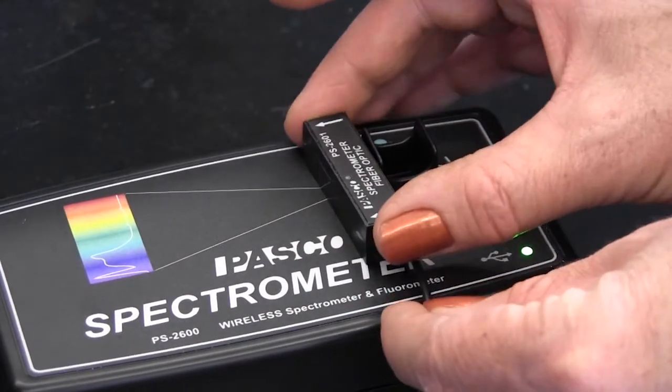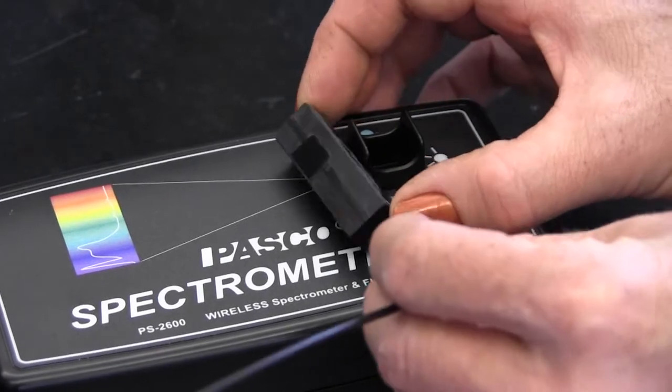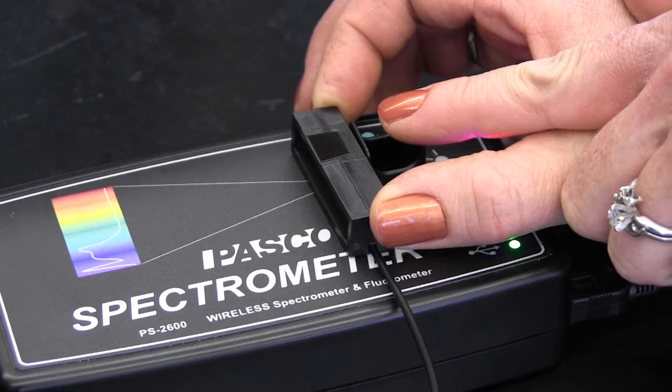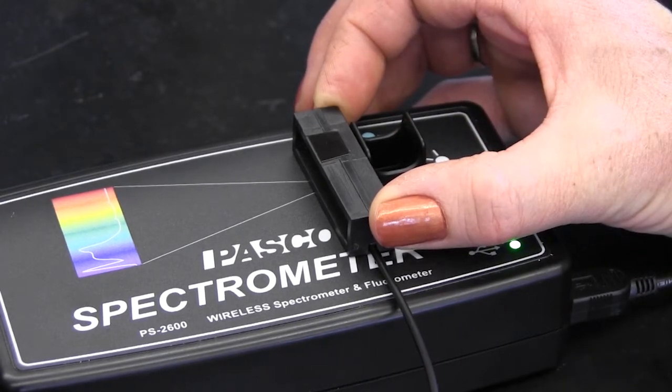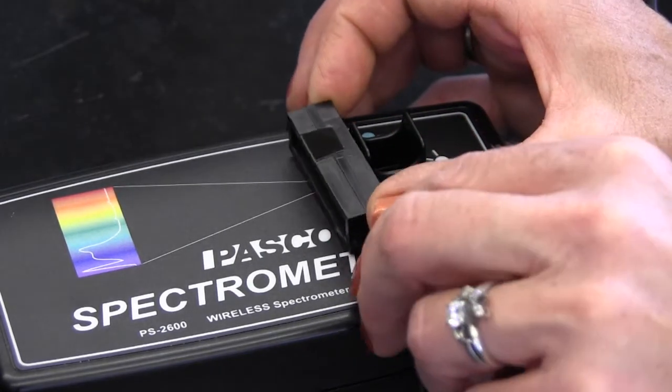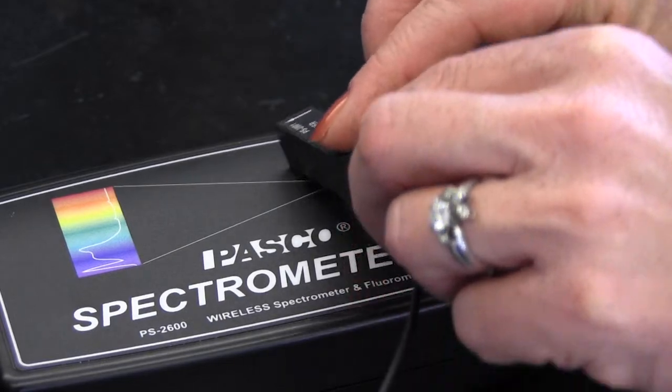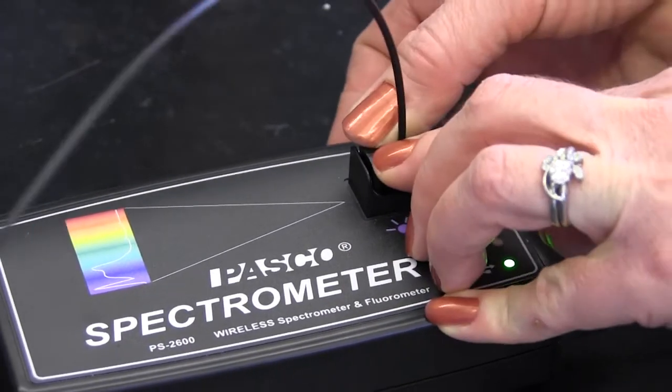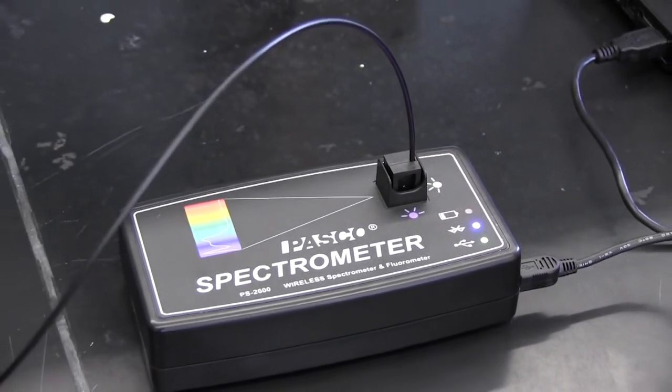The reason why the orientation matters is that on this face there is a window and so the light is going to come in through that window and you want to make sure that you don't touch that window with your fingers. So when you're ready to insert the probe, just grab it by the top and insert it firmly into your PASCO spectrometer.